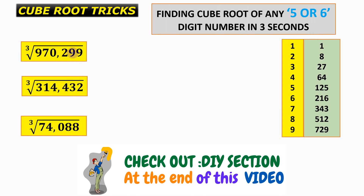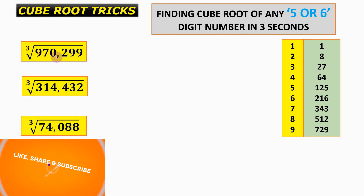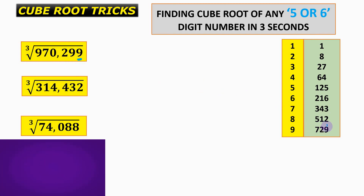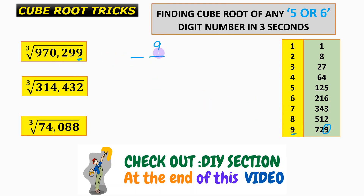Now solving the last three questions faster. The cube root of 970,299: the unit digit 9 corresponds to an original unit digit of 9, so we write 9. Discarding the last three digits leaves 970. Since 970 lies between 729 (9³) and 1000 (10³), picking the smaller number gives the tens digit 9, so the answer is 99.